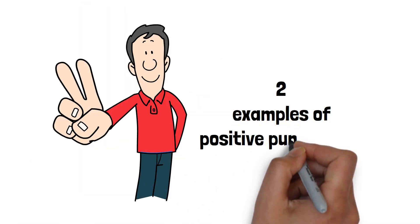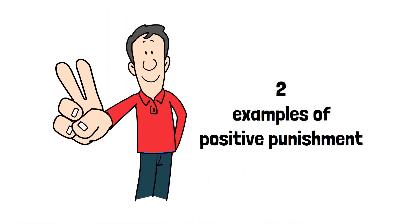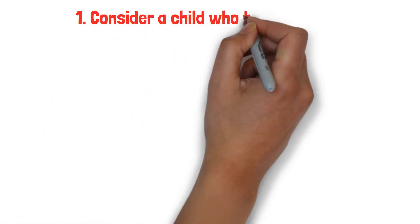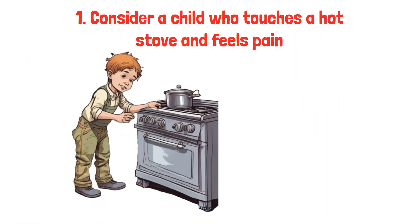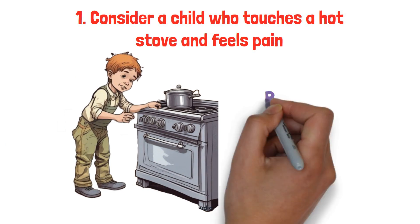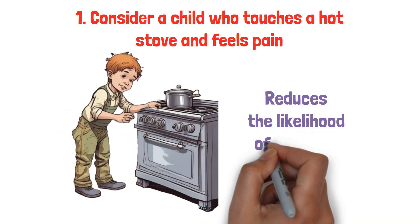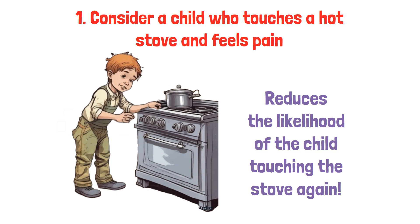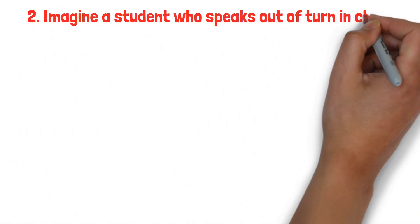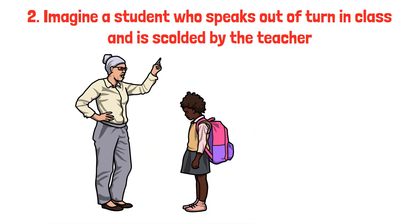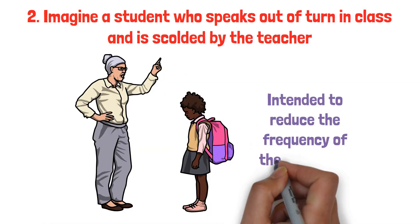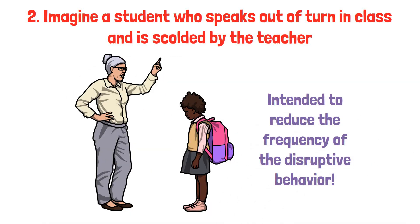Here are two examples of positive punishment. First, consider a child who touches a hot stove and feels pain. The addition of pain, the stimulus, following the behavior of touching the stove, reduces the likelihood of the child touching the stove again. Second, imagine a student who speaks out of turn in class and is scolded by the teacher. The scolding, the stimulus, is intended to reduce the frequency of the disruptive behavior.